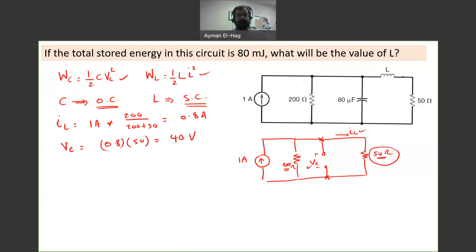So we are done with the first thing which is finding VC and IL. Now everything we know except L. WC plus WL, because we have only two storage elements, is equal to 80 millijoules. So what is WC? It is one half times C.